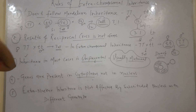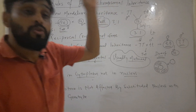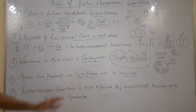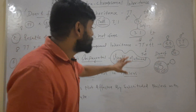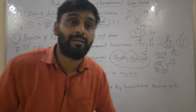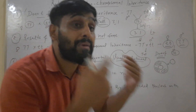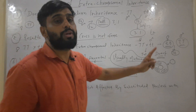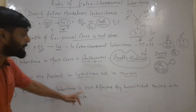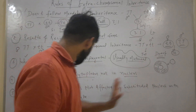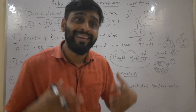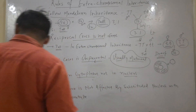To summarize, the rules of extra-chromosomal inheritance are: first, it does not follow Mendelian inheritance; second, results of reciprocal crosses are not the same — they are different; third, inheritance in most cases is uniparental and usually maternal; fourth, genes are present in the cytoplasm, not in the nucleus; fifth, it is not affected by substitution of the nucleus with a different genotype.